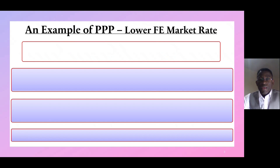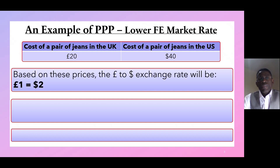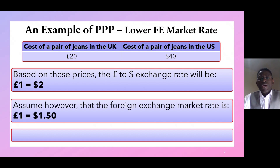To address this topic, we want to look at an example whereby the foreign exchange market rate is lower. Take a pair of jeans that costs 20 pounds in the UK and 40 dollars in the US. Based on these prices, the pound-to-dollar exchange rate would be one pound equivalent to two dollars. Assume, however, that the foreign exchange market rate is one pound equivalent to one dollar fifty cents.